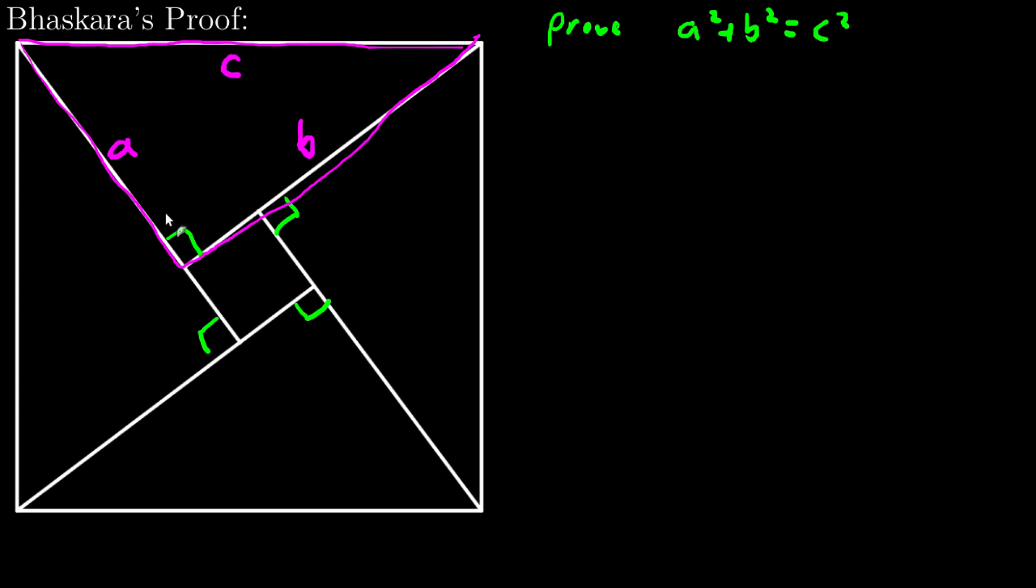So what I have is this. I have three areas to deal with. I have the area of the large square. And notice that this is c wide and c tall square. So this area is c squared, c times c.